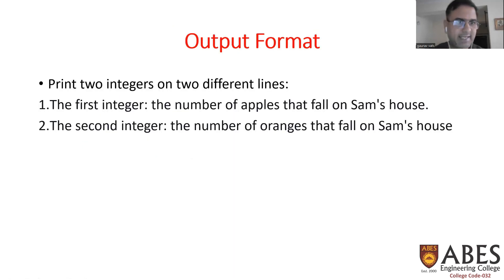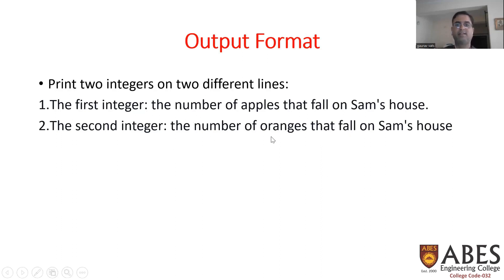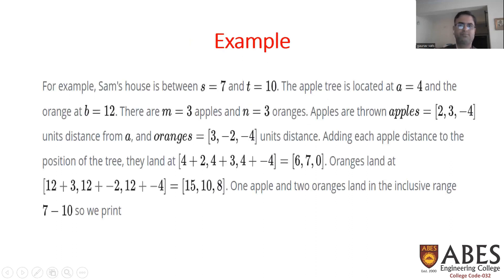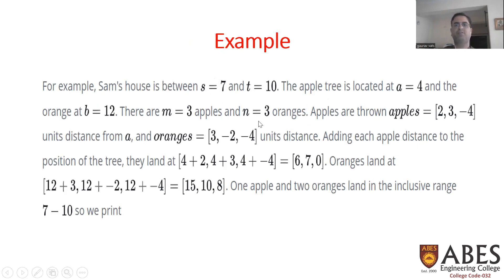The output format says to print two integers on two different lines: the first integer is the number of apples that fall on Sam's house, and the second integer is the number of oranges that fall on Sam's house. For example, suppose Sam's house is between S equals 7 and T equals 10.